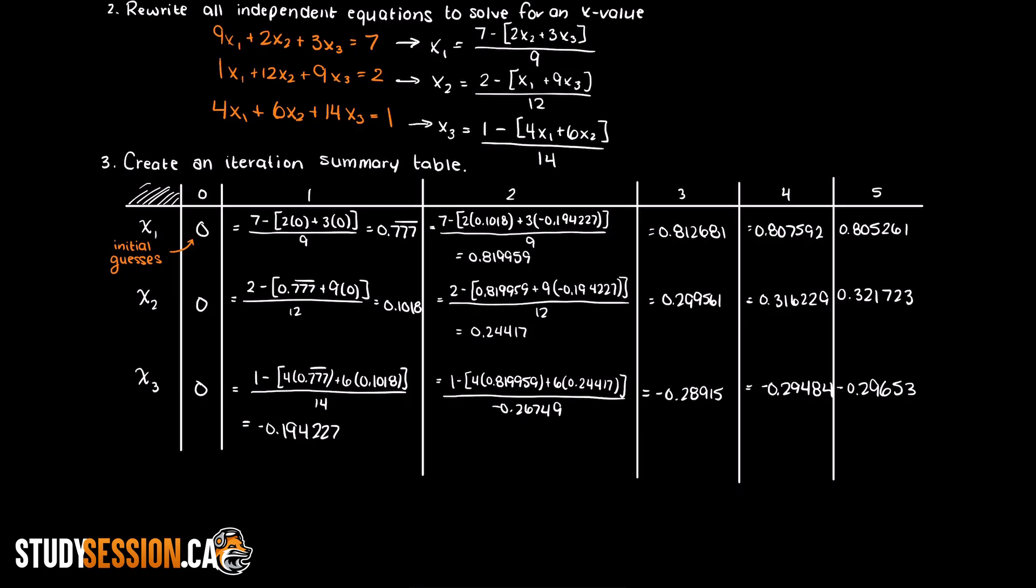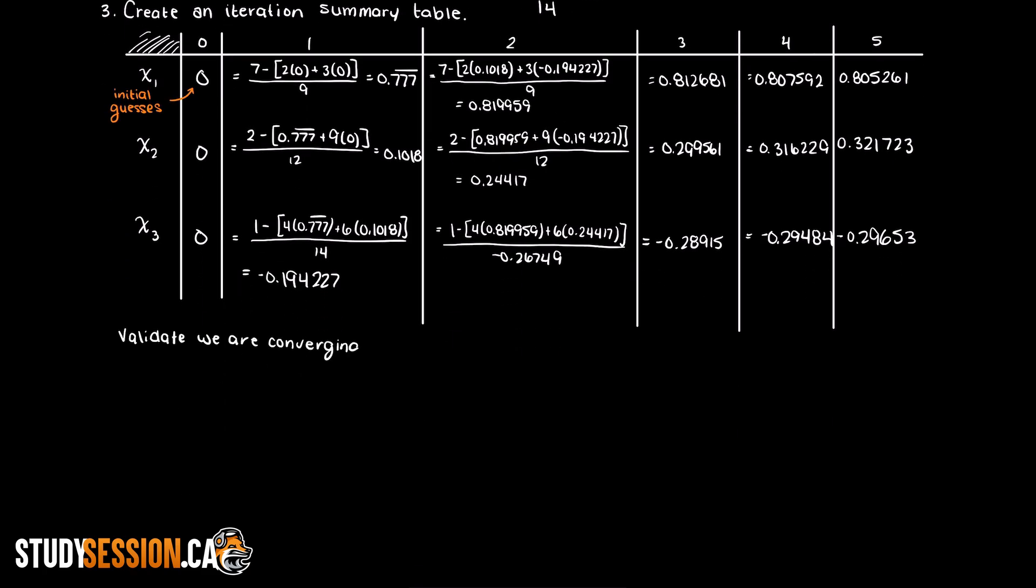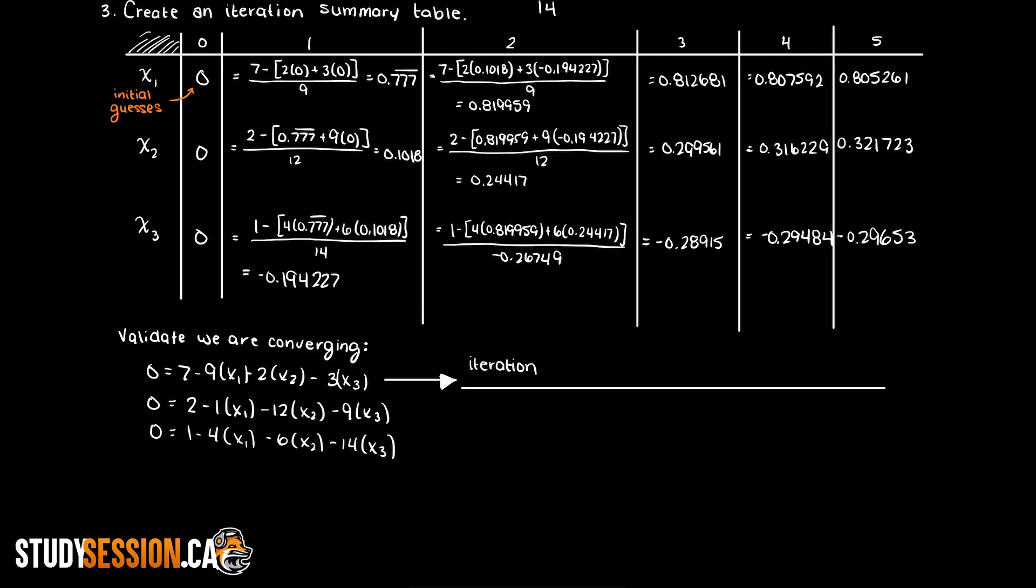Before we wrap up, let's validate that we are actually converging on an answer, which you may have to do on a test if a teacher asks you to do so. To perform this validation, we set all of our equations equal to 0 and then plug in our x values at each iteration. I am just going to do this for equation 1, but the exact same process should be followed for the other two independent equations.